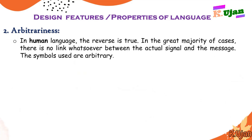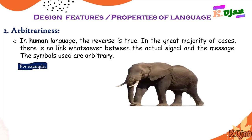Arbitrariness is very different in human beings. According to Charles Hockett, in human language the reverse is true — in the great majority of cases there is no link whatsoever between the actual signal and the message. The symbols used are arbitrary. For example, there is no actual resemblance between the word 'elephant' and the shape of an elephant — the animal looks very different from the letters E-L-E-P-H-A-N-T.